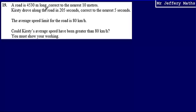Kirsty drove along the road in 205 seconds, correct to the nearest 5 seconds. The average speed limit for the road is 80 kilometres per hour, and we're asked could Kirsty's average speed have been greater than 80 kilometres per hour.